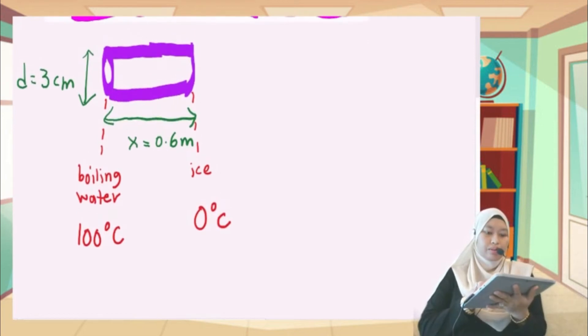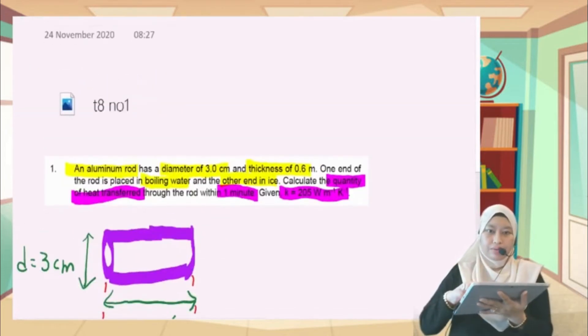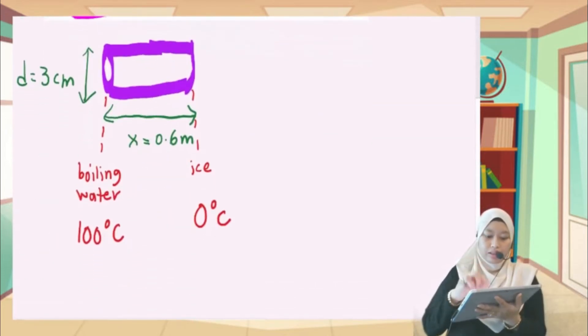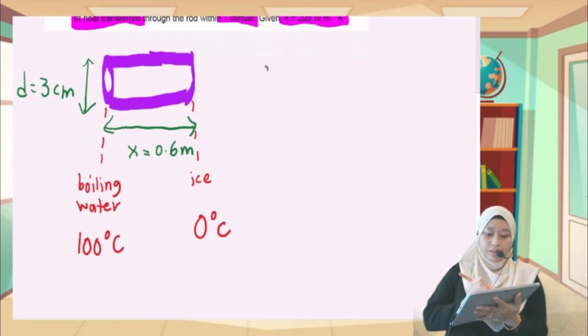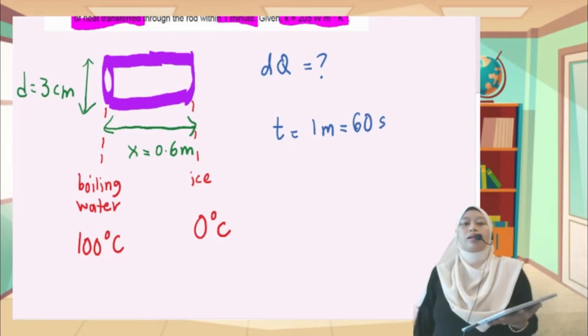The question asks for the quantity, which is DQ, in one minute. One minute basically equals 60 seconds.